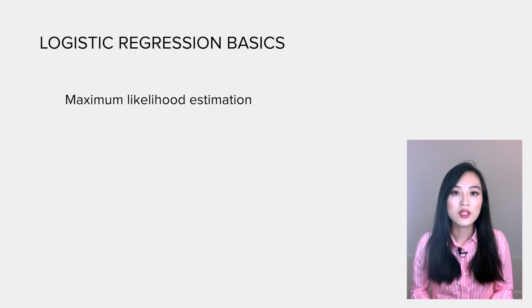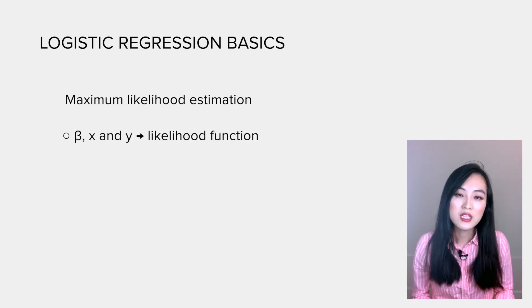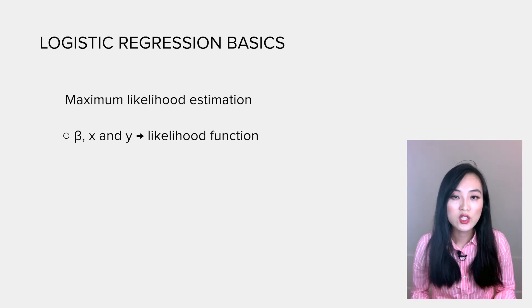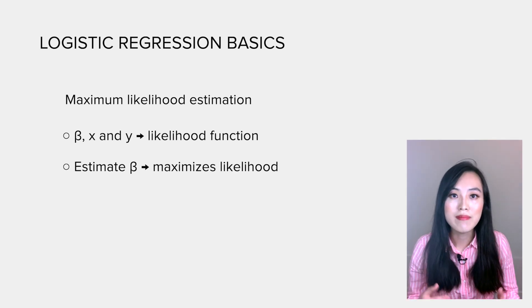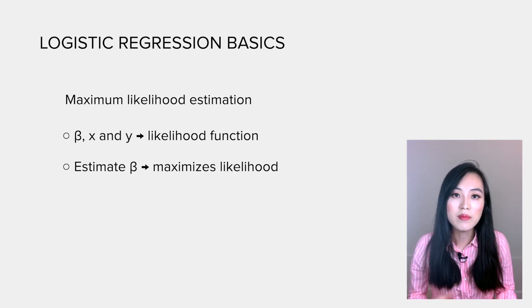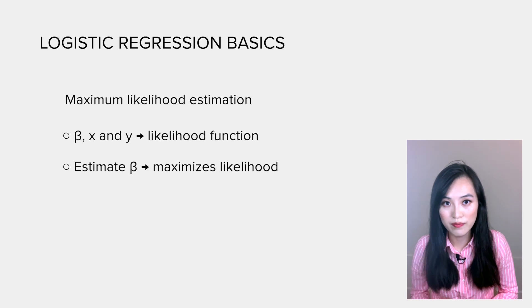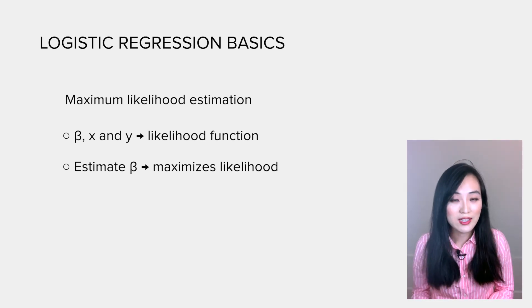A method called maximum likelihood estimation is often used to get betas. Specifically, we use betas, x, and y to formulate the likelihood of getting the observed class. Then we obtain betas to maximize the likelihood. In other words, we want to select betas that maximize the probability of observing the data we observe.